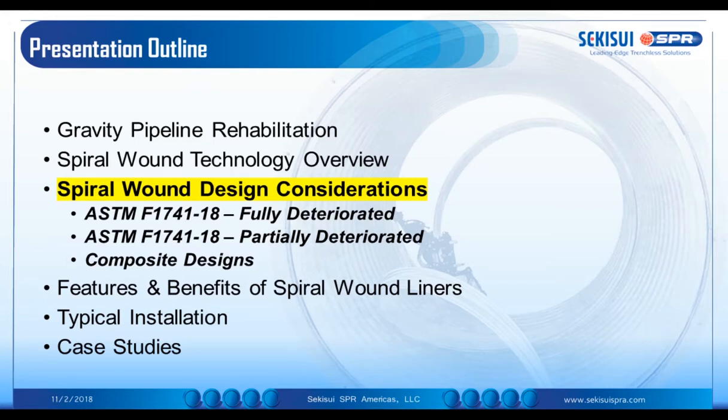Now we're going to talk a little bit about design considerations. The design for machine wound spiral PVC liners is conducted in accordance with ASTM F1741, which only recently was revised this year. That includes options for fully deteriorated pipes, partially deteriorated pipes, and also composite design systems, most often used for non-circular applications.